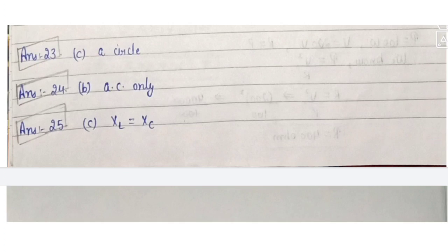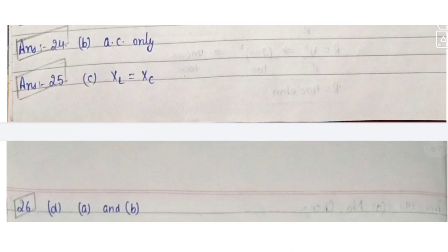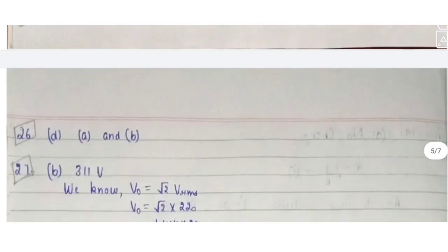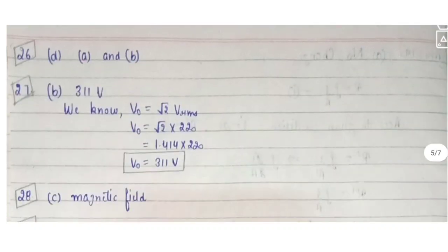Question 24: a transformer works on the principle of mutual electromagnetic induction. Question 25: in an LCR series circuit, current is maximum at resonance. The resonance condition is XL = XC.